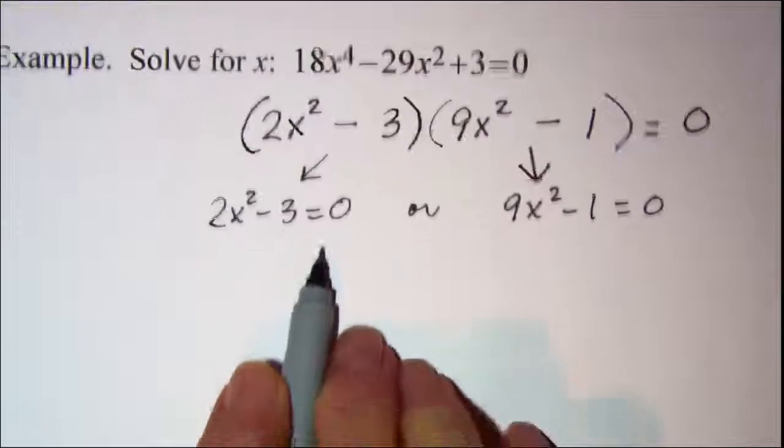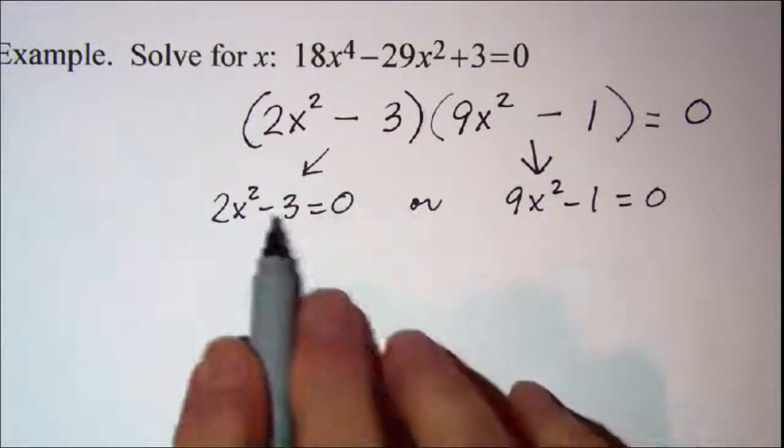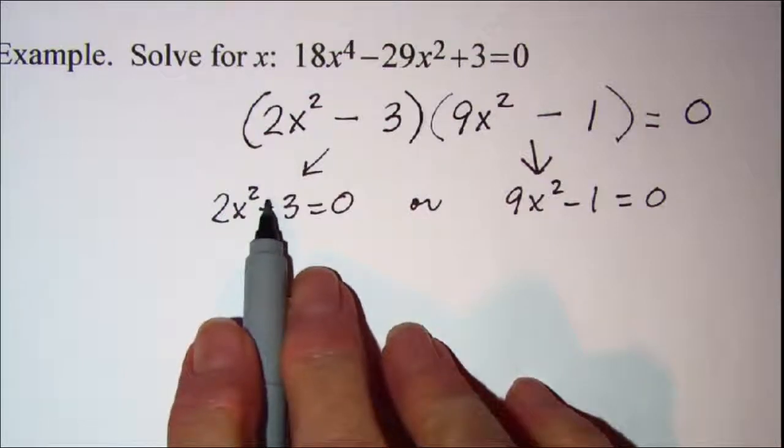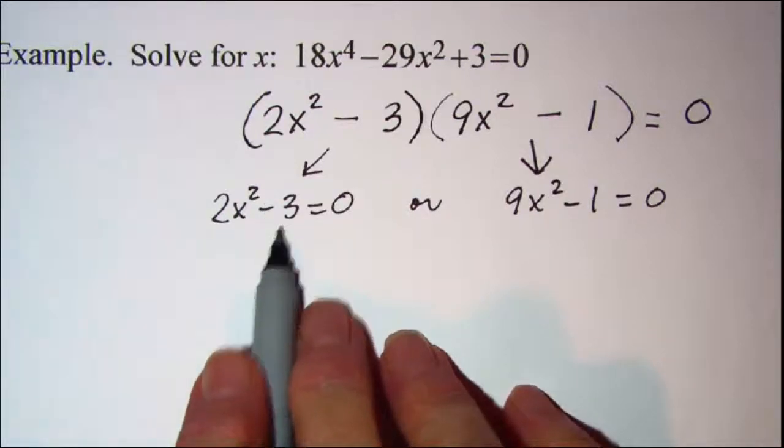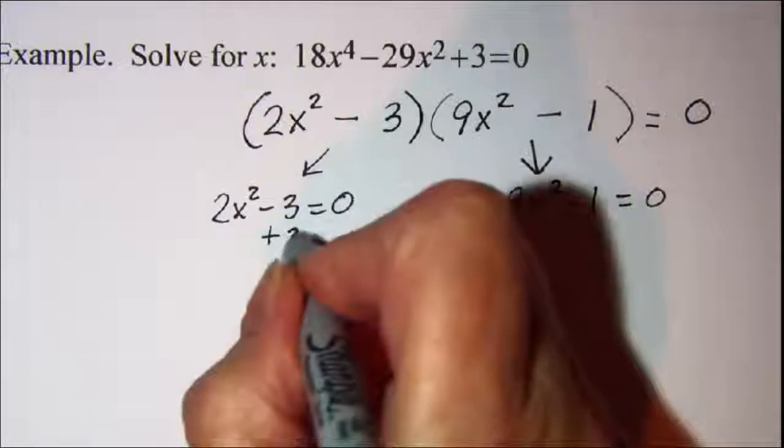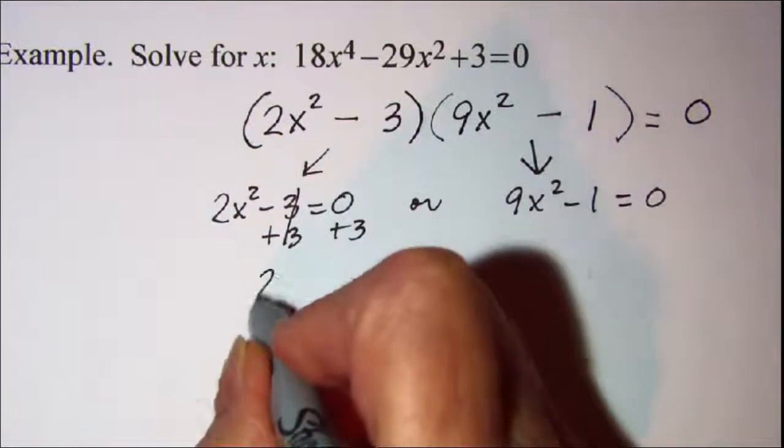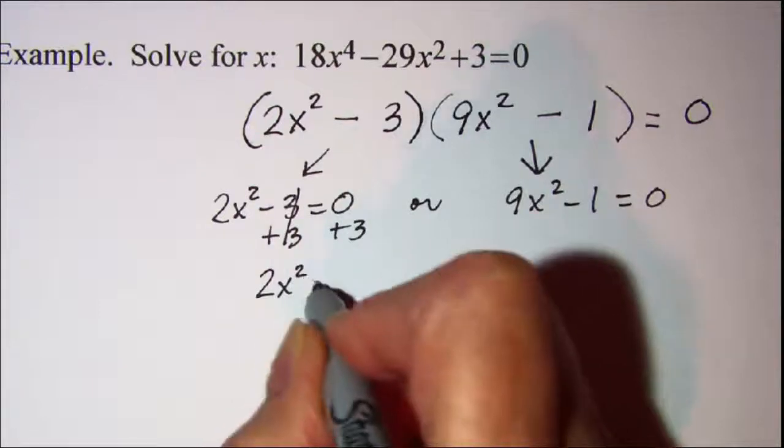Now we just need to solve each of these. These definitely are quadratic but I can see that I can use the square root property on this. So I'm going to add 3 to both sides. These will cancel and I have 2x squared is equal to 3.